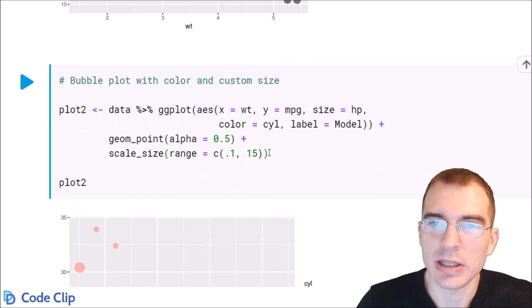We're essentially going to make the same plot except we're adding color by cylinder and we're also going to add a custom scale range for the points.